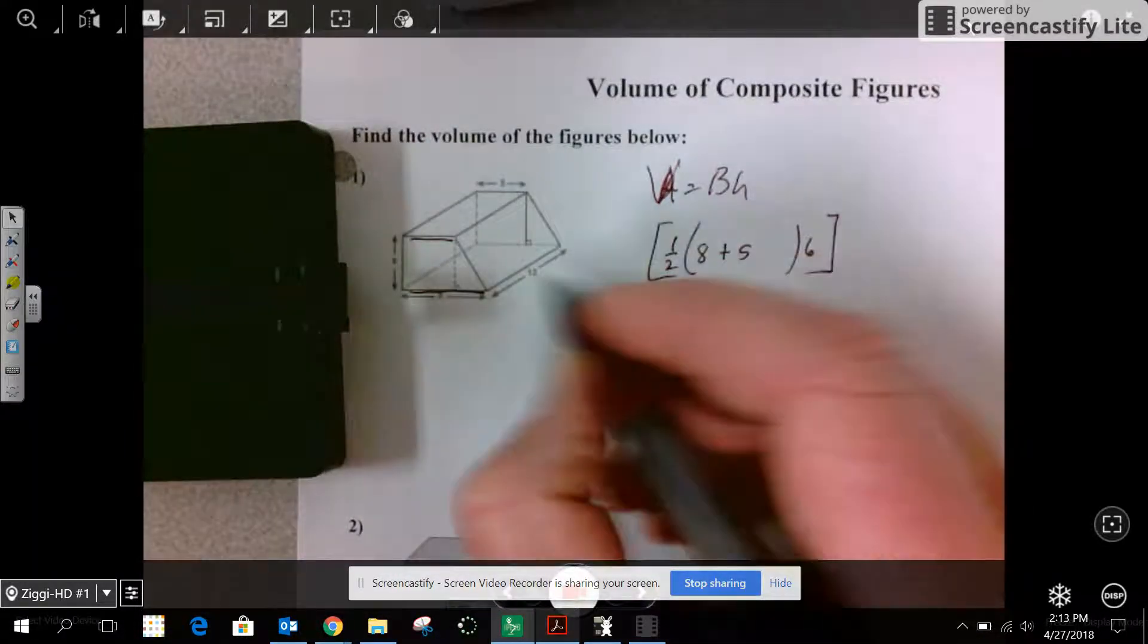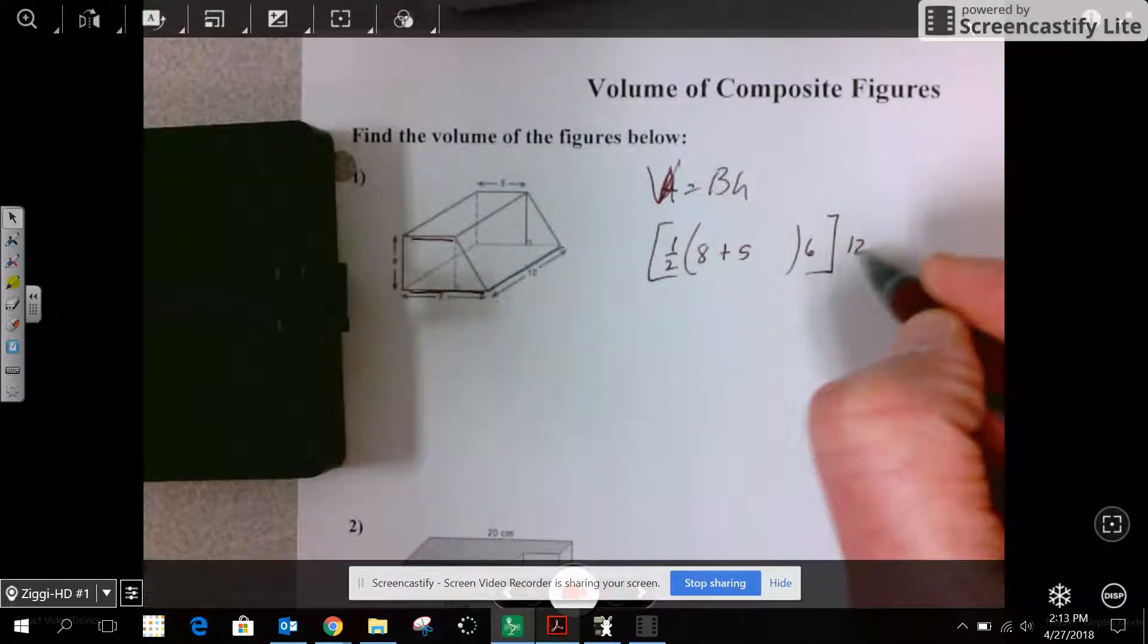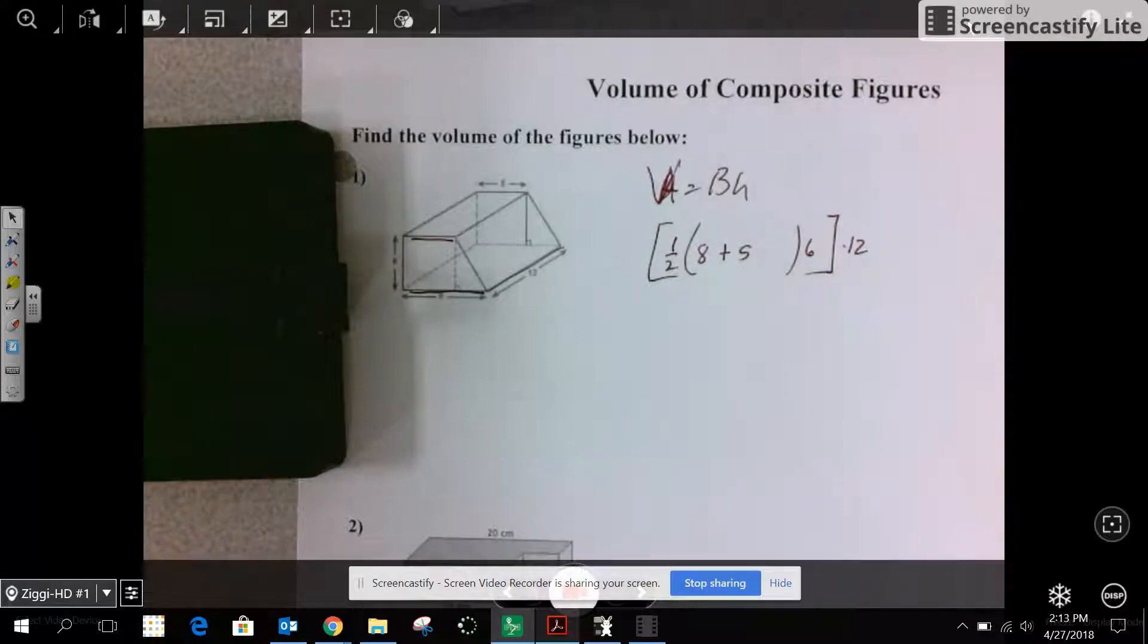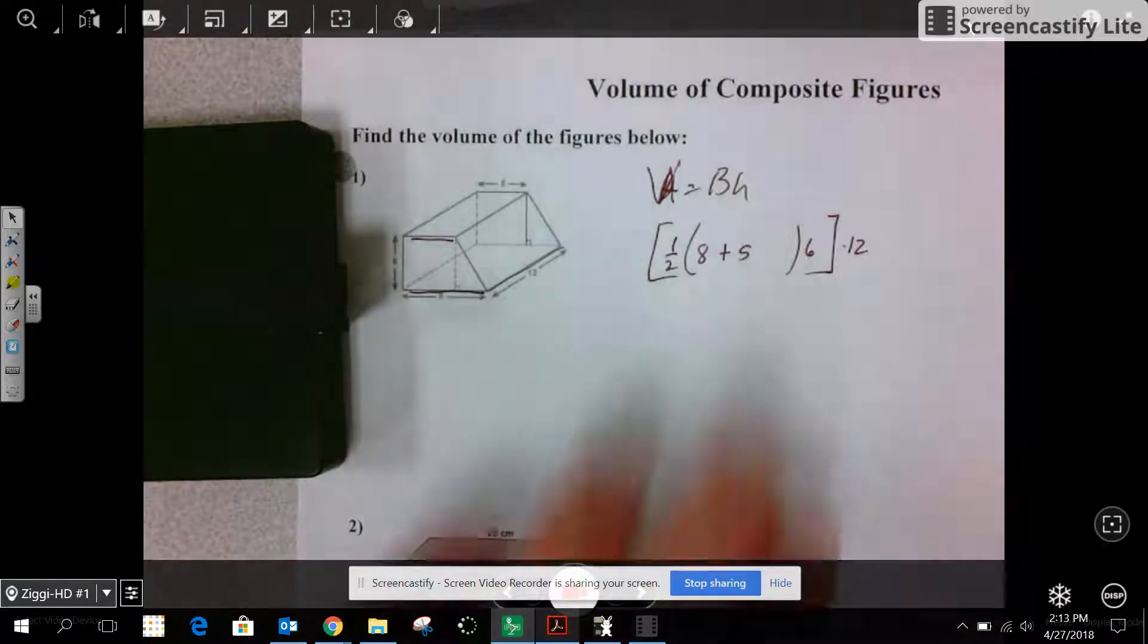So one-half base one plus base two times height. And you're going to take that times the height as if you were setting it on end. Use your calculator's parentheses or find this calculation separately.